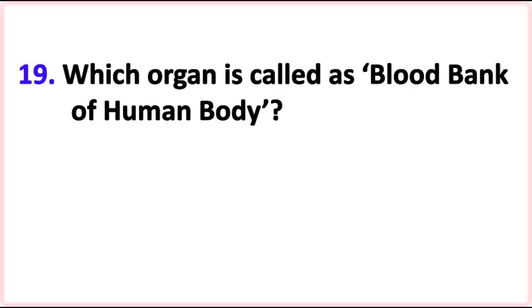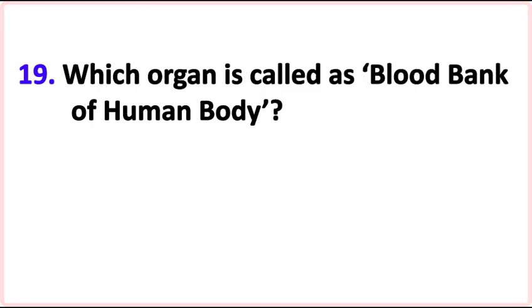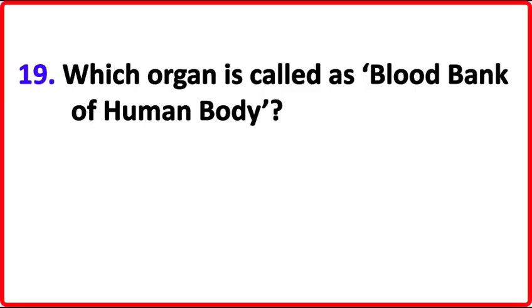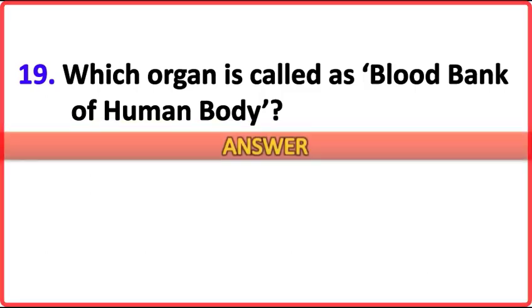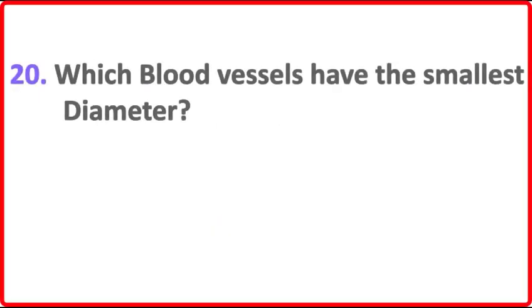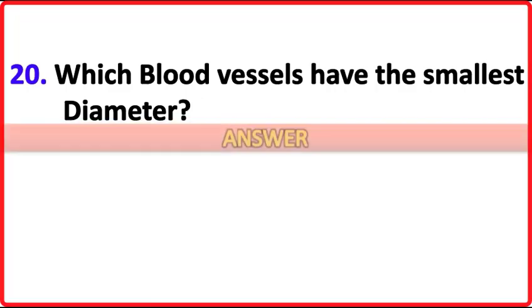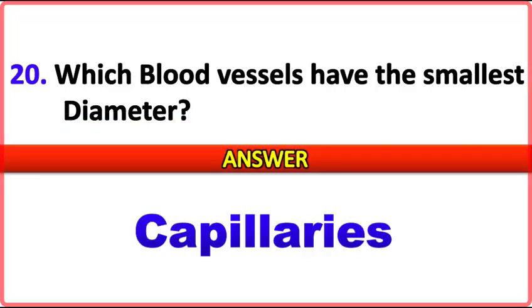Which organ is called the blood bank of the human body? Answer: Spleen. Which blood vessels have the smallest diameter? Answer: Capillaries.